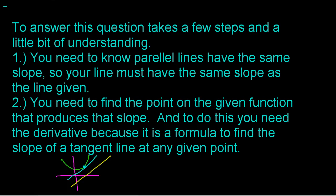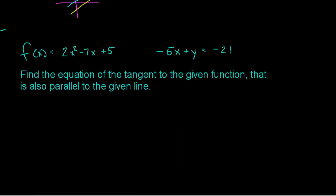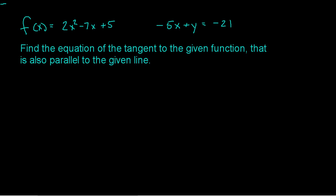If I already know the slope because I know the line I want to be parallel to, we're essentially going to work backwards. So let's look at an example. I have a function, 2x squared minus 7x plus 5, and I have a line, negative 5x plus y equals negative 21. The question wants me to find an equation of the tangent line that is tangent to my function and parallel to my given line.